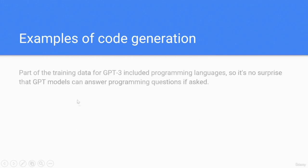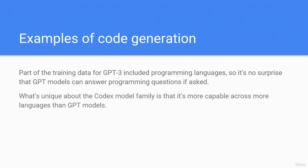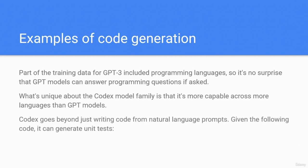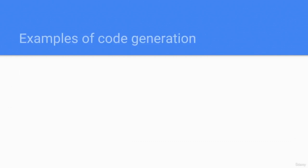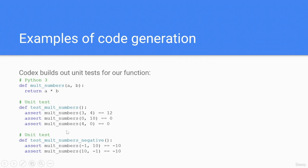Examples of code generation. Part of the training data for GPT-3 included programming languages, so GPT models can answer programming questions if asked. What's unique about the Codex model family is that it's more capable across more languages than GPT models. Codex goes beyond just writing code from natural language prompts — given the following code, it can generate unit tests. For example, a function that multiplies numbers A and B returning A*B, with unit tests asserting that multiply(3,4) equals 12, multiply(0,5) equals 0, and multiply(-2,6) equals -12.